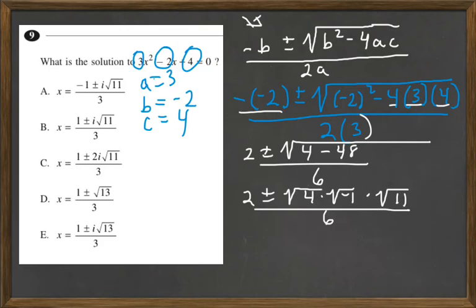Okay, last step. 2 goes into 6 three times, so we can make that a 1, plus or minus, and then that's all going to be over 3.